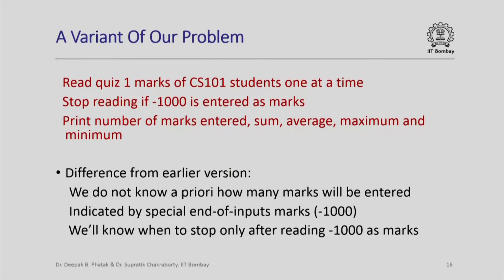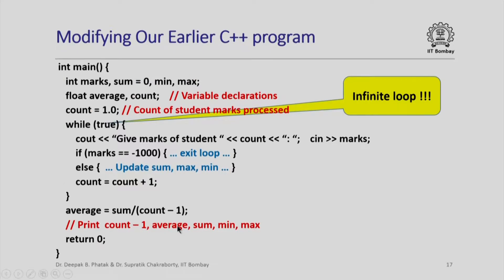Now let us look at a variant of our problem. Earlier we provided the number of students as an input. Suppose instead we are required to read marks of CS101 students one at a time, and if at any point minus 1000 is provided as the marks, we must stop reading and print the number of marks entered, the average, minimum, and maximum. The difference is that we do not know a priori how many marks will be entered. The end of inputs is indicated by the sentinel value minus 1000, and we will know when to stop only after we read it.